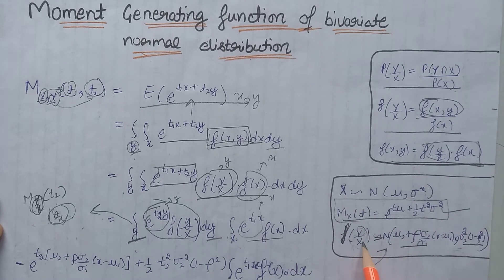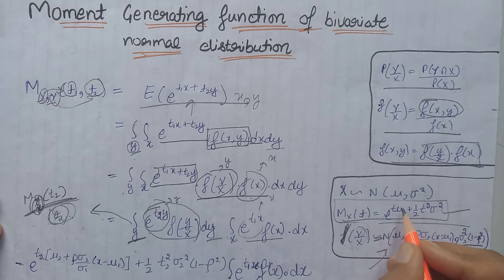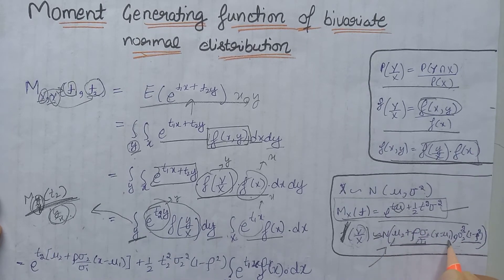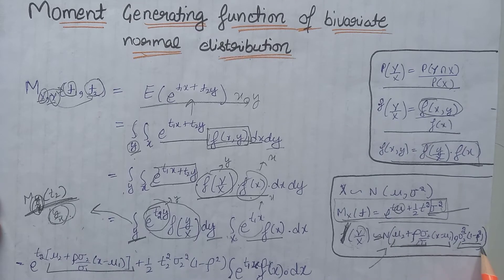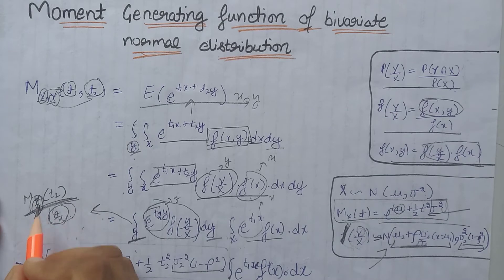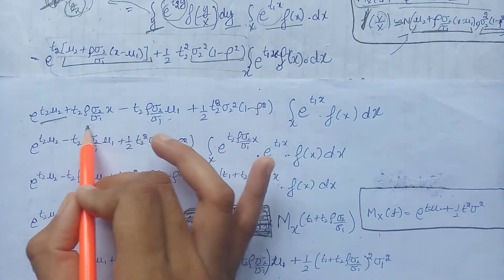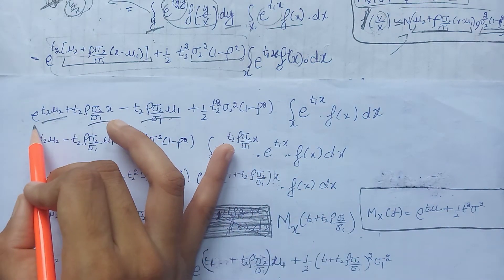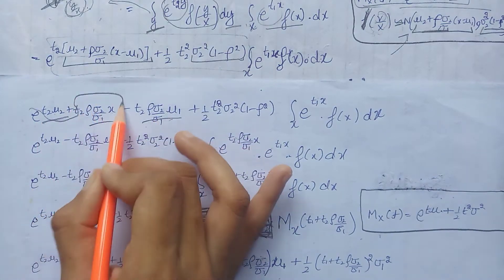For the normal distribution, the moment generating function is a known formula. Since y given x belongs to a normal distribution with its conditional mean and conditional variance, we can write its MGF by substituting: at the place of mu we write the conditional mean term, plus half t2 squared, and at the place of sigma squared we write the conditional variance term. After expanding the brackets, we get three different terms, and e raised to power t2 times rho sigma2 divided by sigma1 times x is a function of x.